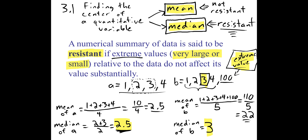The mean was not resistant — it got affected quite a bit by adding that additional data value. The mean does not hold its ground; it is easily influenced. It is wishy-washy. The median is firm and strong and holds its ground. For data like set B, we might want to say that 3 is a more accurate representation of where the middle is, since four of the numbers are pretty close to 3. A mean of 22 might not be the best representation because most of these numbers are not near 22 — the 100 had a significant influence on the mean.